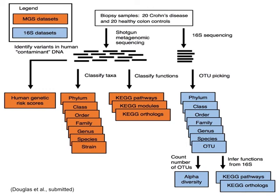We wanted to do shotgun metagenomics on these patients, so we have shotgun metagenomic sequencing, and we also did 16S sequencing. What we could also do — which is how the project started — is we took the 95% of DNA we were going to throw away and actually called SNPs with it. From one sample we now have SNPs called for human genetics, shotgun metagenomics, and 16S. We collapsed most of these SNPs into what's called the genetic risk score for IBD, which gives a single number: a measure of your risk for developing Crohn's disease.